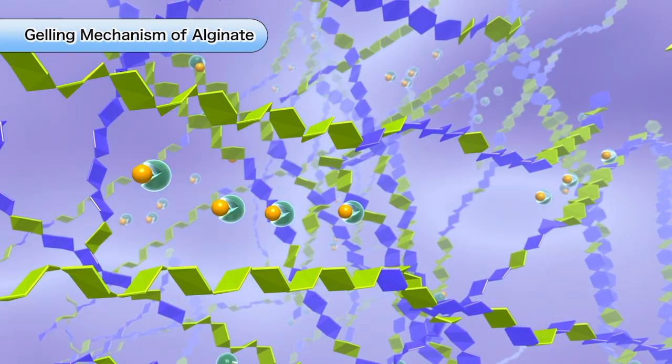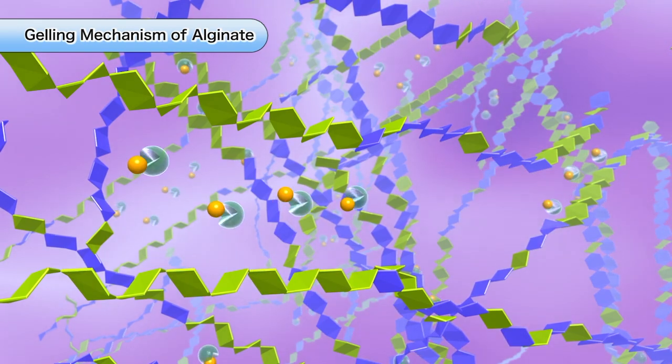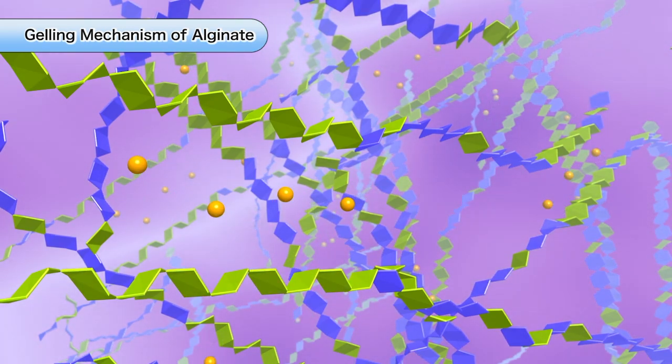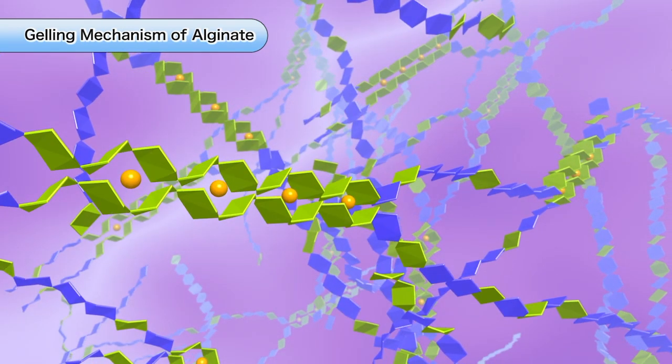As the pH of the solution is gradually reduced, the sequestered calcium becomes released, reacting with the alginate. The solution gels uniformly.